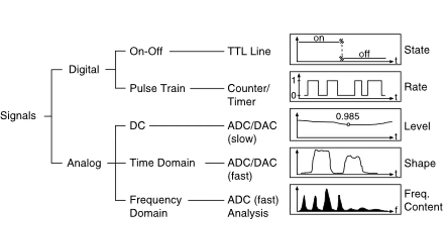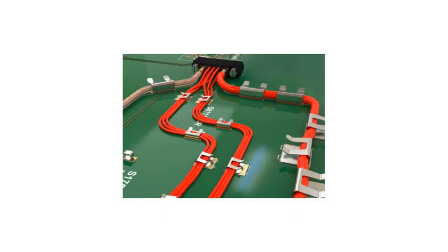Automotive harnesses are used to transmit a wide variety of signals, for example low-level control signals, high-current signals for electrical motors, and high-frequency signals for multimedia applications. All conductors are collected to thick bundles that are routed through the vehicle. A potential problem with these harnesses is the presence of cross-talk.